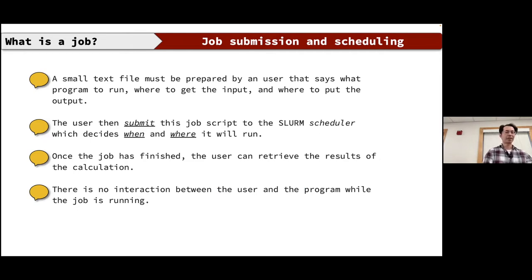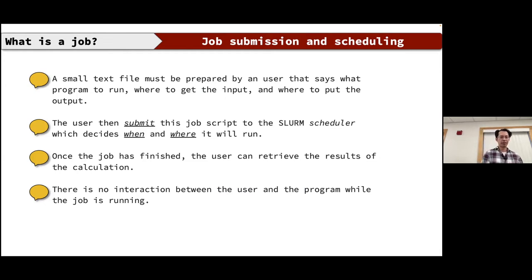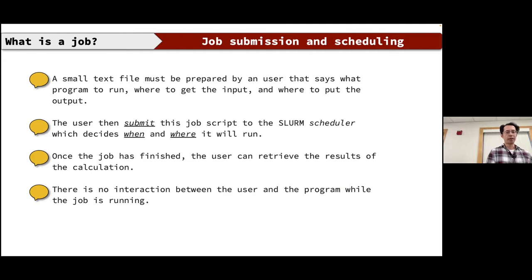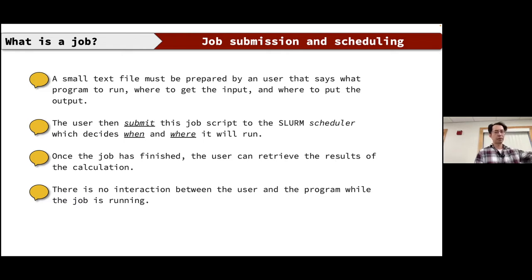What is a job? A job is a plain text file — a bash script — that you prepare yourself. In it you specify the commands to run, where the input data is, and where to store the output. You submit this job script to the SLURM scheduler, which decides when and where to run it. Once the job is done you retrieve the results. There is no interaction between the user and the program while the job is running.